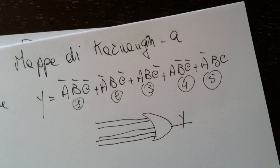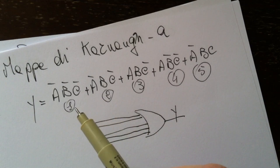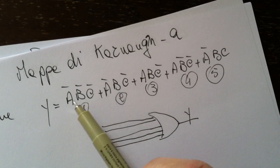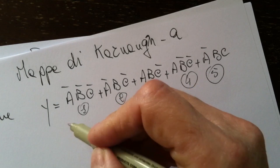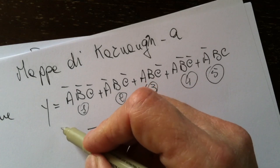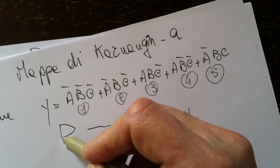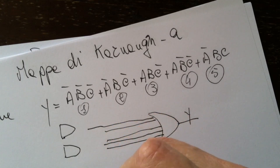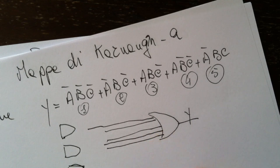Each input has a single AND port, so that realizes the product between those terms. So we have the first AND port, the second one, the third, and the fifth.